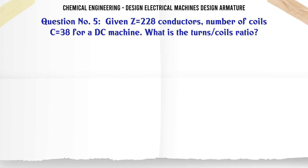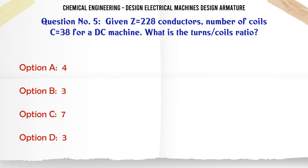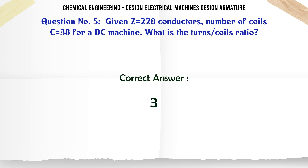Given Z = 228 conductors and number of coils C = 38 for a DC machine, what is the turns-to-coils ratio? Options: a) 4, b) 3, c) 7, d) 3. The correct answer is 3.